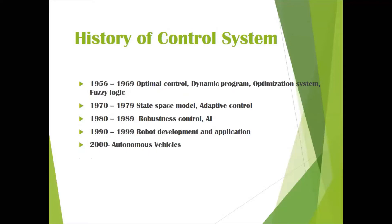Nichols and Evans are scientists who contributed many fundamental applications to control systems. The basic domains of control systems include optimal control, optimization, fuzzy logic, and from 1970 onwards a new domain emerged — state space model and adaptive control. Then robustness control and artificial intelligence emerged, and during the 1990s robotic applications were developed, and from 2000 onwards control systems are used widely in autonomous vehicle applications.